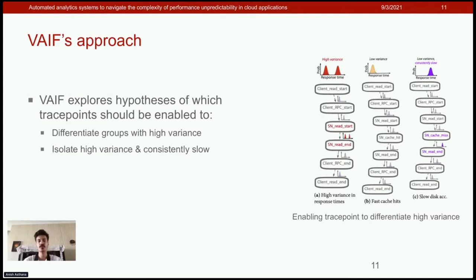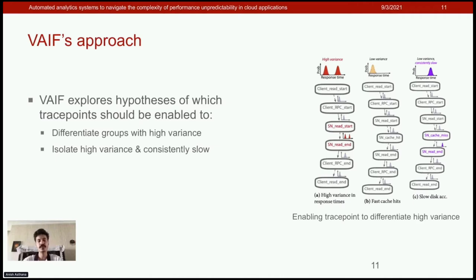An example shows how to differentiate high variance due to caching operations. In figure A, the response time variance of read requests is high, and the trace edge spanning the storage node accesses is the dominant contributor. Enabling trace points to differentiate cache hits from cache misses distinguishes fast paths from slow ones. By doing so, VAIF addresses requirement 1 — enabling trace points in response to performance variations — and narrows the search space to focus on caching operations. VAIF also maintains a history of trace points enabled on behalf of high variance, along with the statistics that motivated these decisions, thus addressing requirement 3 by explaining decisions to users.